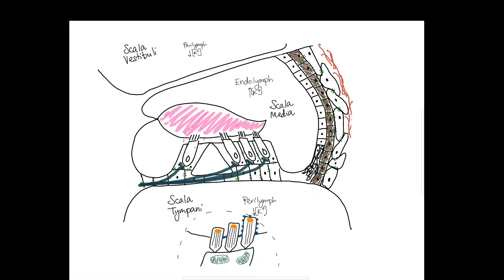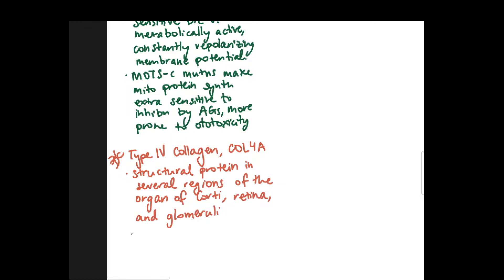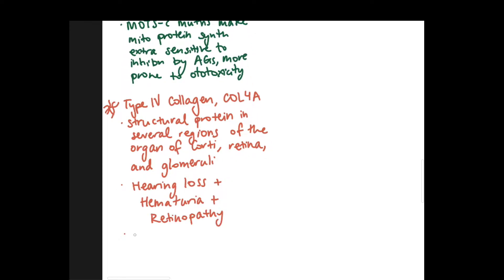Moving on to syndromic hearing loss, we'll start with mutations in type 4 collagen or the COL4A genes. Type 4 collagen is a structural protein in several regions throughout the organ of Corti, the retina and the glomeruli. So people with type 4 collagen mutations can get hearing loss plus hematuria plus retinopathy and so you may recognize this syndrome as being Alport syndrome. It's X-linked but can be dominant or recessive depending on the mutation.